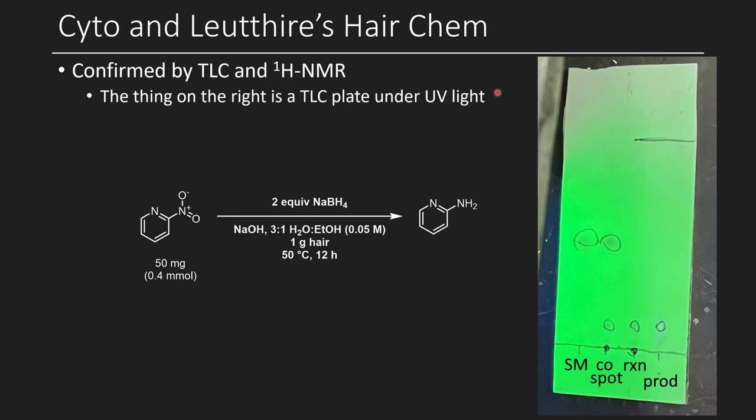As before, we have another TLC plate where we can show the reaction progressing. Here we have first the starting material, which is just the 2-nitropyridine, as well as a co-spot, which both has the starting material and the reaction mixture. Here you can see the reaction mixture on its own, and then here's a standard of the product. You can see that the product, which is the 2-aminopyridine, as well as the reaction, have the same retention factor. They've moved the same amount, and so they're both the same compound.